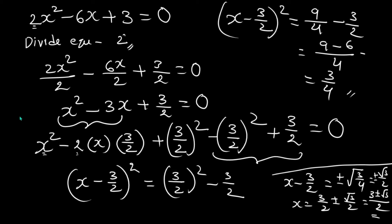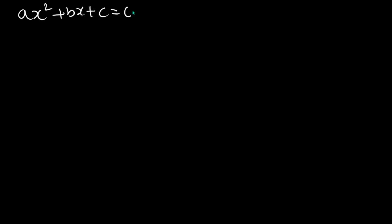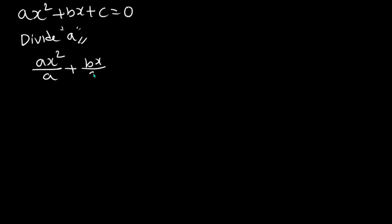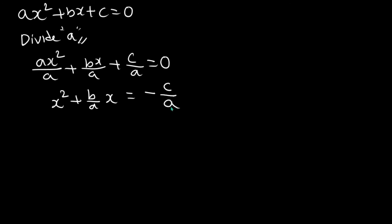This is also how the formula itself is derived — you need to understand the process before using the formula. Now let's apply this to the general form: ax squared plus bx plus c equals zero. The first step is to divide the entire equation by a, giving us ax squared over a, plus bx over a, plus c over a equals zero, which simplifies to x squared plus (b/a)x plus c/a equals zero.